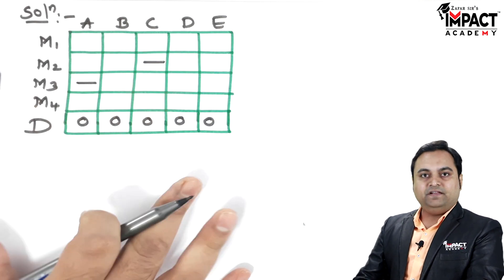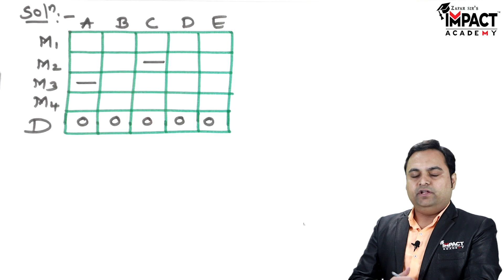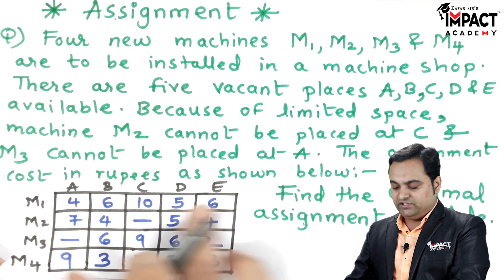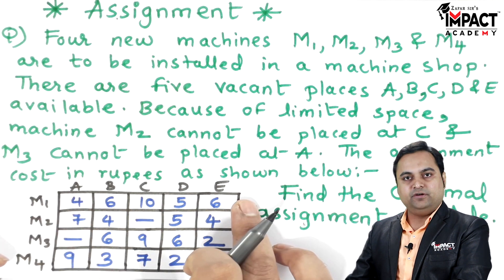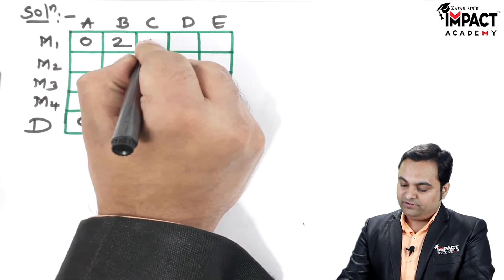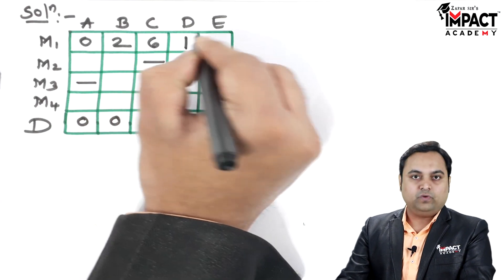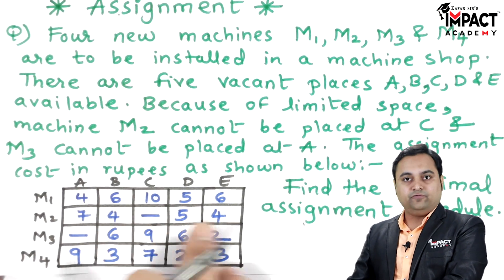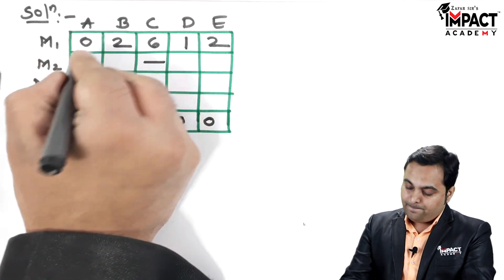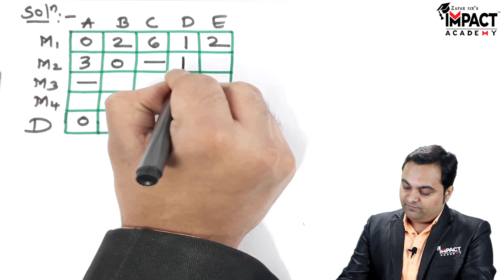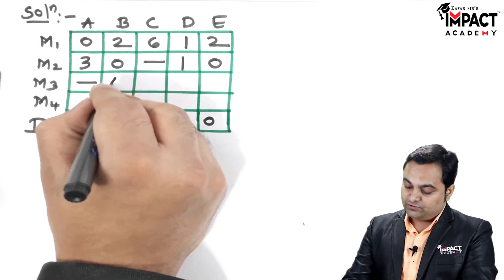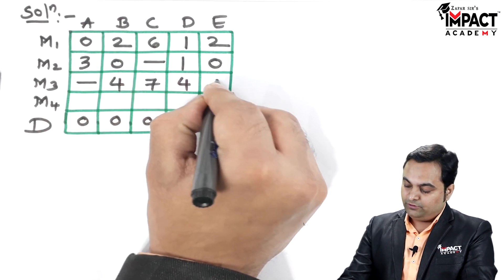Now that the table is balanced, we check each row starting from the first. If no zero is present, we subtract the least value to create one. For row 1, the least value is 4: subtracting gives 0, 6, 1, 2. For row 2, the least value is 4: subtracting gives 3, 0, 1, 0. For row 3, the least value is 2: subtracting gives 4, 7, 4, 0.